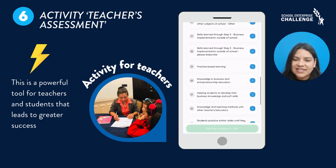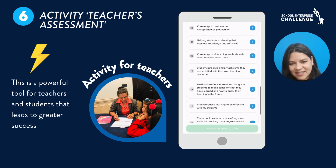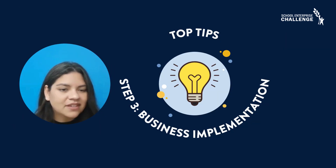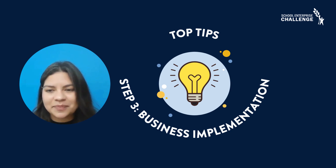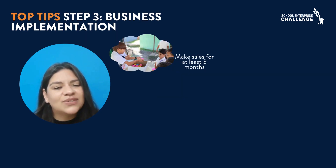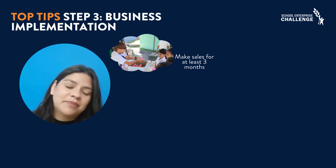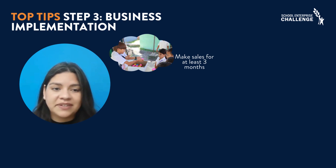Those are the six activities that are part of Step 3, Business Implementation. Now, here are some top tips you should consider as you continue your journey with the School Enterprise Challenge. Run your business for at least two to three months before submitting your report. This extended period allows you to make multiple sales and gain valuable experience.